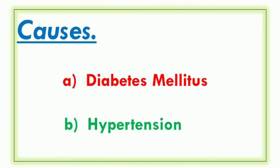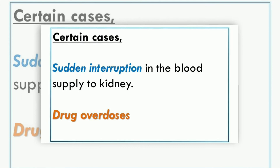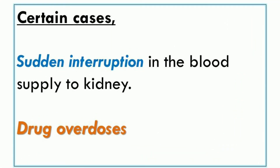Kidney failure کی وجوہات: کچھ لوگ stress — ذہنی دباؤ — کا شکار ہو جاتے ہیں۔ کچھ لوگ diabetes mellitus اور hypertension کے مریض بن جاتے ہیں — یہ دو بنیادی وجوہات ہیں renal failure کی۔ بعض اوقات body functions properly کام نہیں کر پاتے اور خون کی supply kidney تک رکاوٹ کا شکار ہو جاتی ہے۔ Drug overdoses may also result in kidney failure — نشے کا شکار ہو جانا بھی kidney failure کی وجوہات میں سے ایک ہے۔